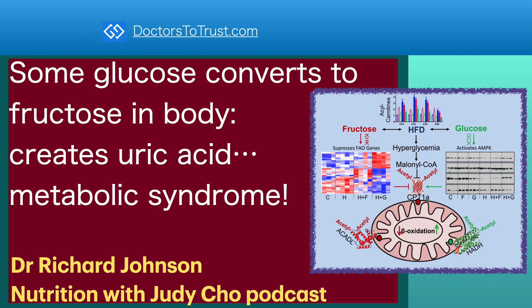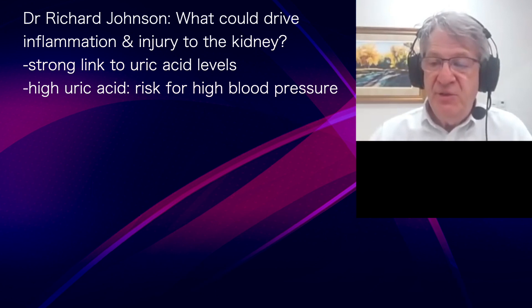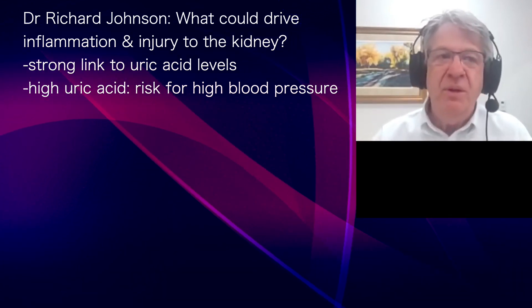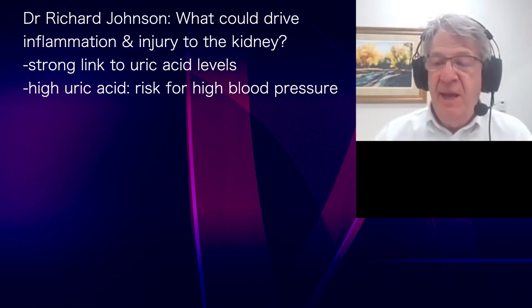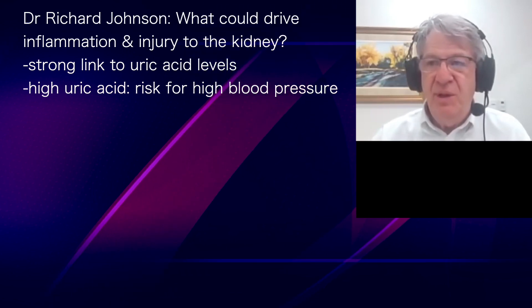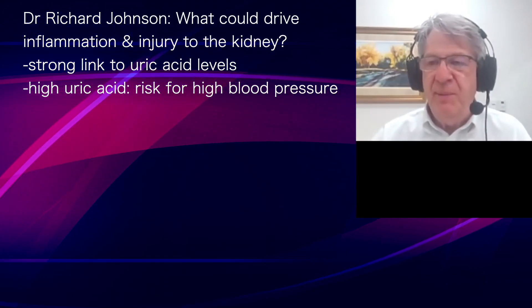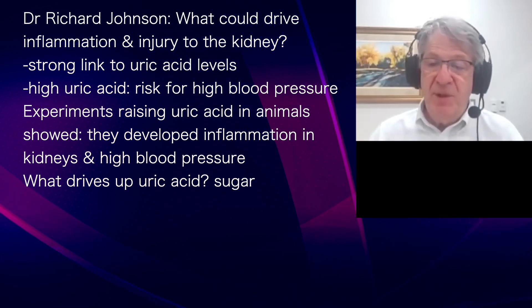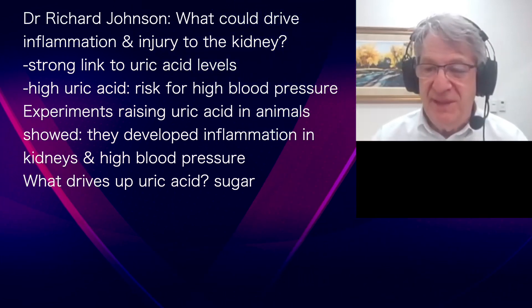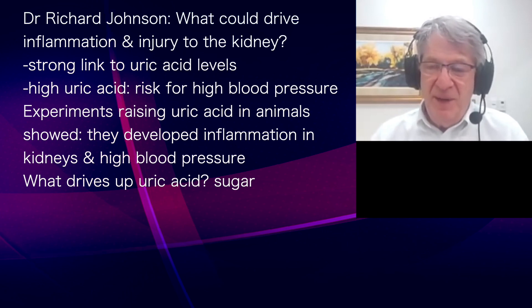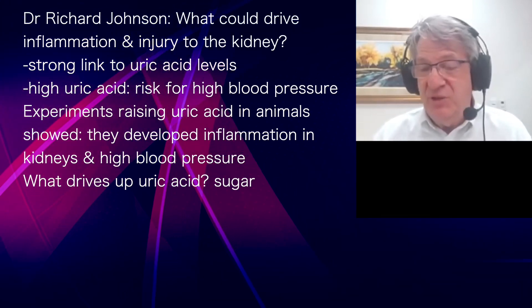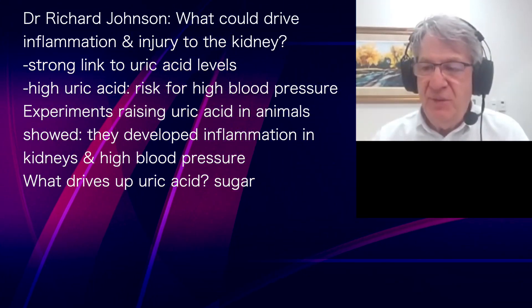I started looking for what could drive the inflammation and injury to the kidney, and I realized there was a very big linkage with uric acid. People with high uric acid were really at increased risk for developing high blood pressure. We started doing experiments by raising uric acid in animals, and suddenly we found that those animals developed mild inflammation in their kidneys and high blood pressure just by raising uric acid.